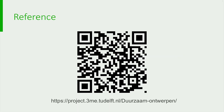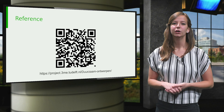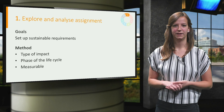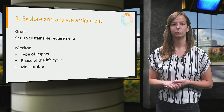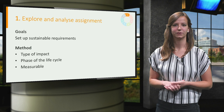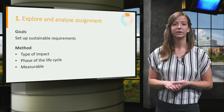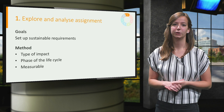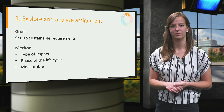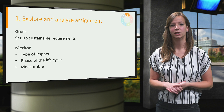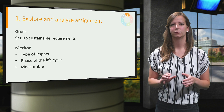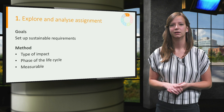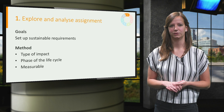You can use these references if you wish to find out more about the topics discussed in this video. Now let's begin. The first phase is called the explore and analyze assignment phase. Here you will set up your sustainability requirements. When doing so make sure to be precise and specific. Just like with all your other requirements it is necessary that they can be validated. The requirement 'having a low impact' would for example be too vague.